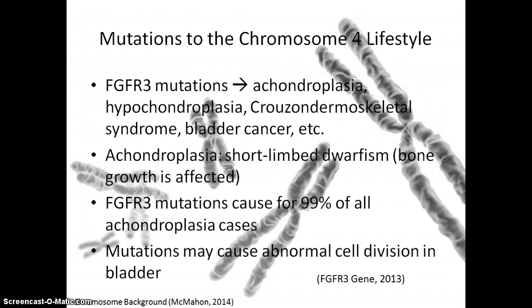Mutations to FGFR3 lead to various diseases such as achondroplasia, hypochondroplasia, Crouzon dermoskeletal syndrome, bladder cancer, and others. Achondroplasia is short-limbed dwarfism, which results from bone growth being affected, and FGFR3 mutations cause almost all achondroplasia cases. Mutations may also cause abnormal cell division in the bladder, leading to bladder cancer.